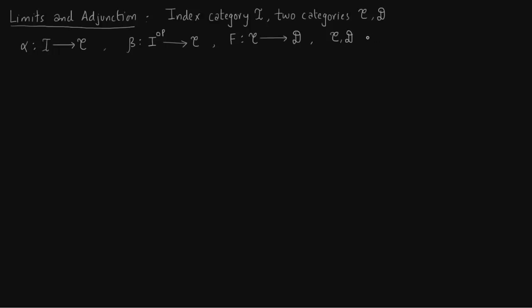When C and D admit limits and colimits indexed by I, we have the following natural morphisms. These limits and colimits are indexed by category I. Then there are natural morphisms. These natural morphisms are a direct consequence of the definition of limit or colimit in terms of direct product. If you see this in terms of direct product, this is very natural.